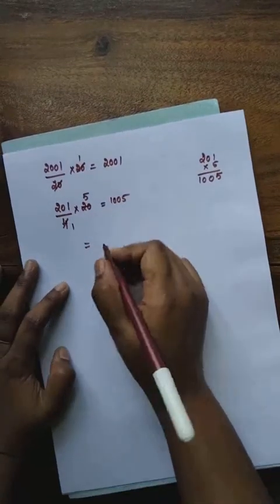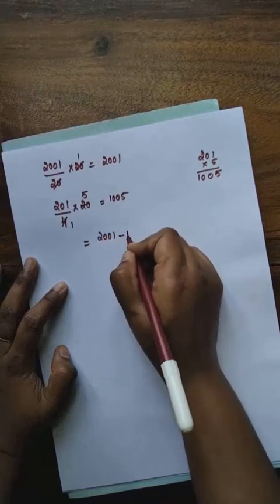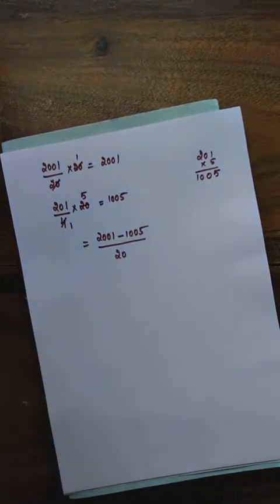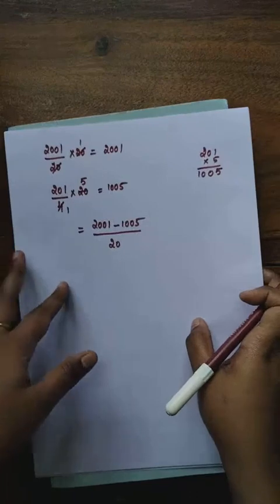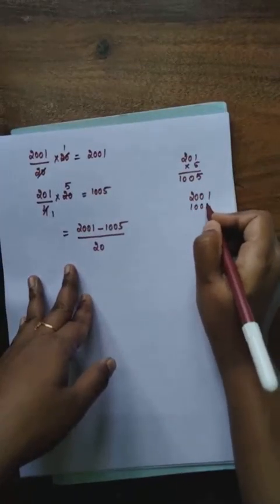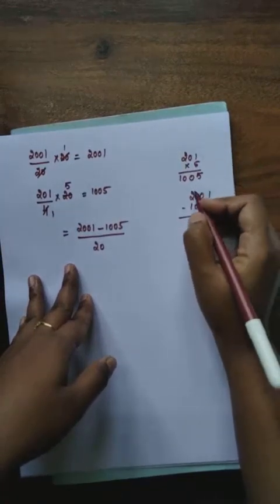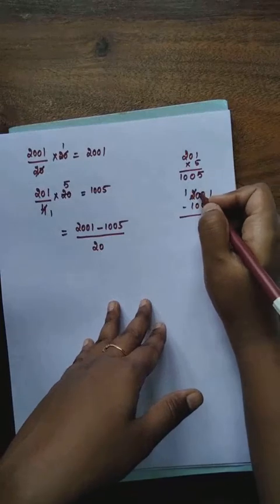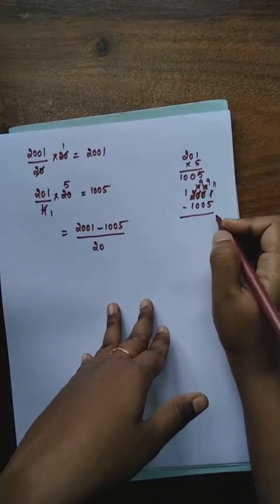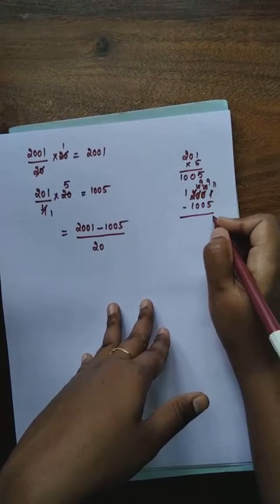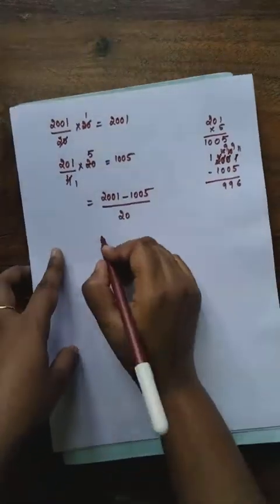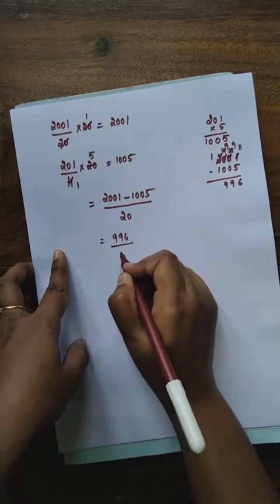Now subtract: 2001 minus 1005. We borrow to get 11 minus 5 = 6, remainder 9, 9, giving us 996. So we get 996/20. This is an improper fraction. Again we are going to convert this improper fraction into a mixed fraction.